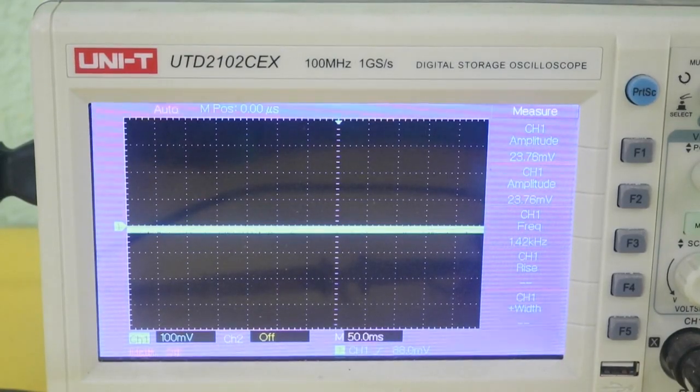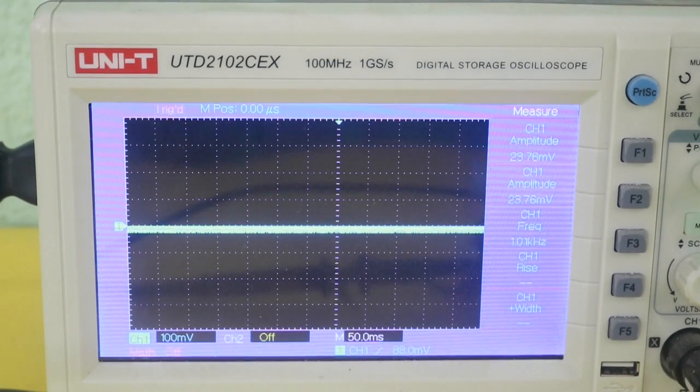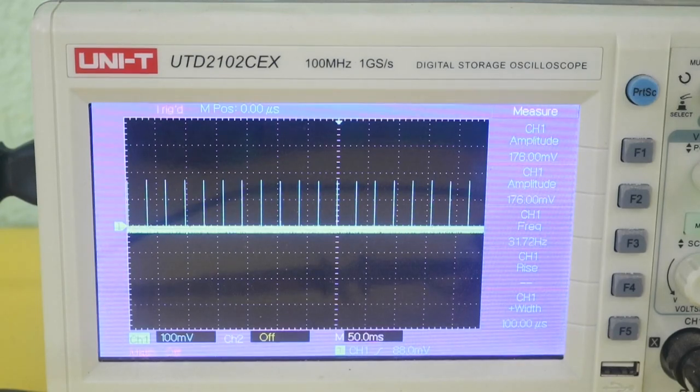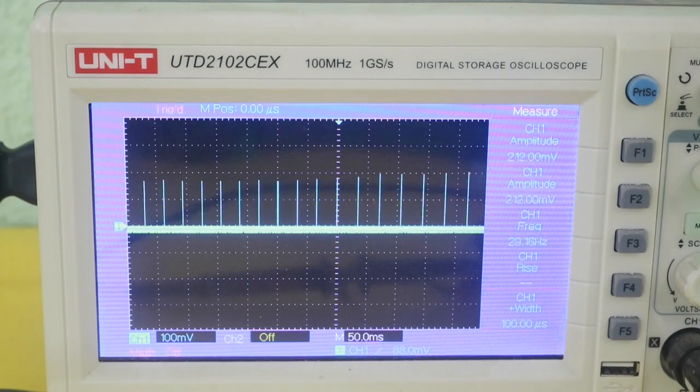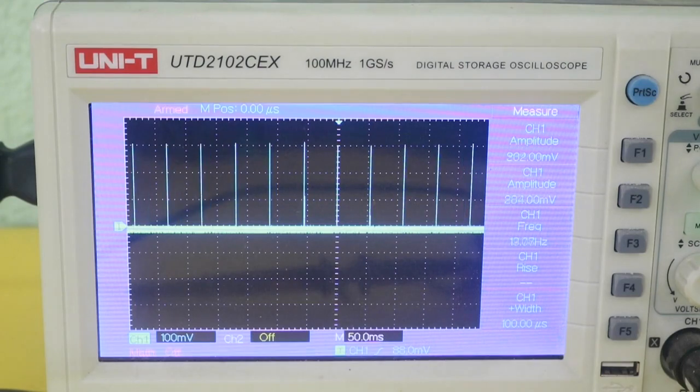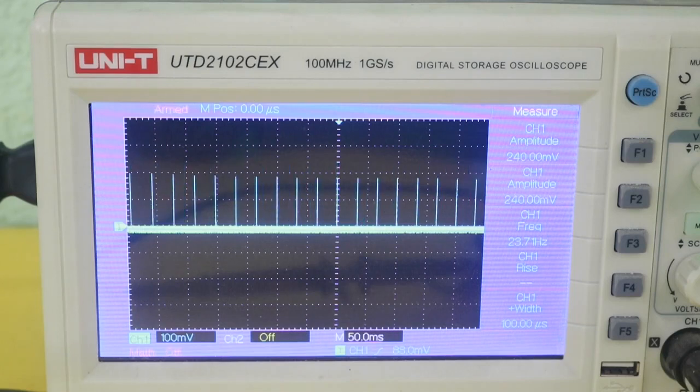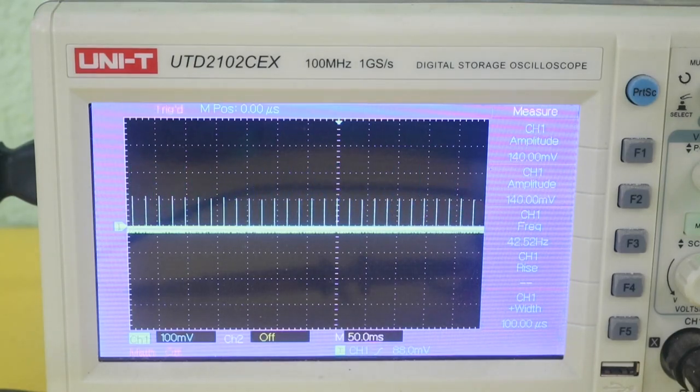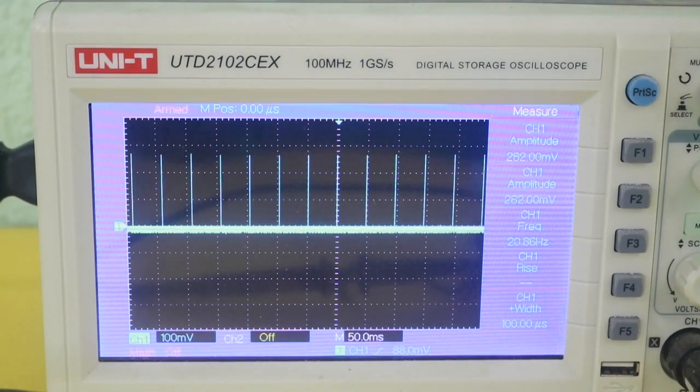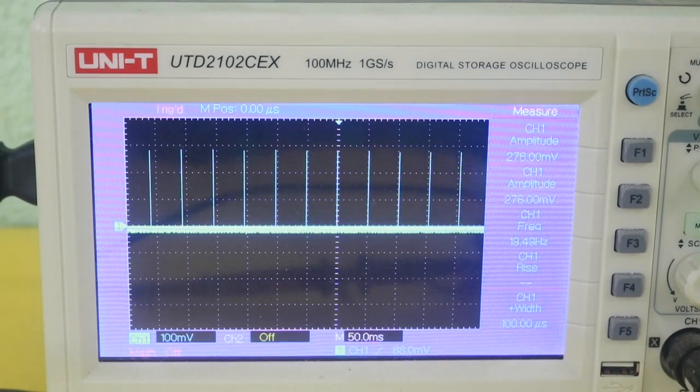Let's use the oscilloscope to see the pulse train. I'm going to turn on the power. And there you can see the pulses. If we lower the frequency, the space between the pulses is larger. And vice versa. The pulses are of a very short duration and that is a characteristic of this type of oscillator.